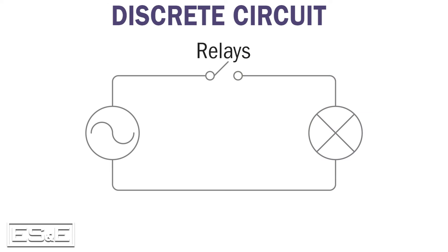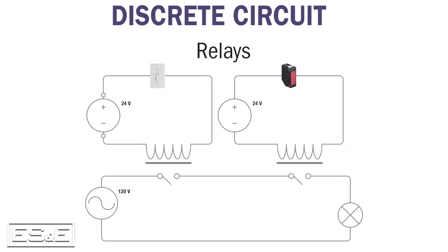From our original circuit drawing, we've replaced the switch with two relays. When voltage is applied to the relays, the circuit closes and allows power to be delivered to the light or the load. In the example, the power controlling the relay's coil does not match the load side of the relay's contacts. This allows the use of a safer voltage for the control circuit while providing larger power circuits to be switched on or off as needed.